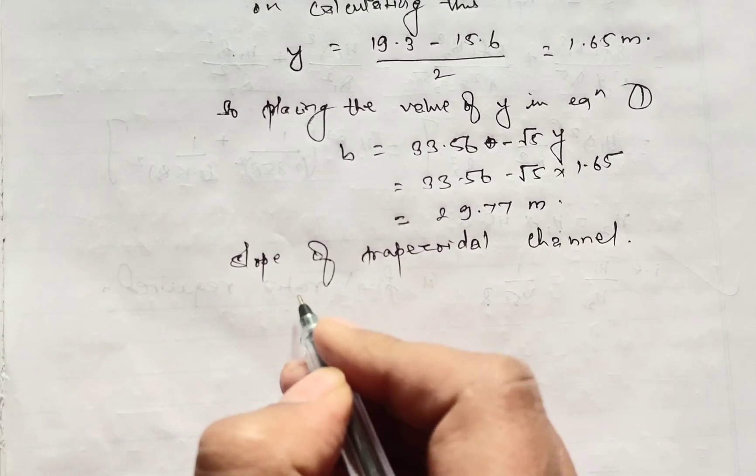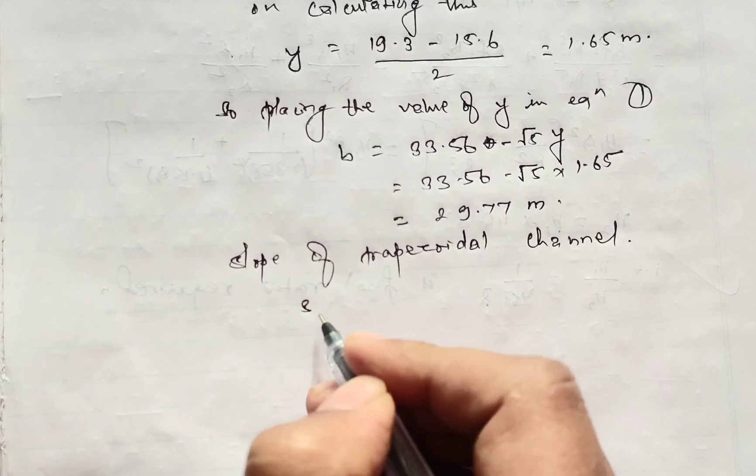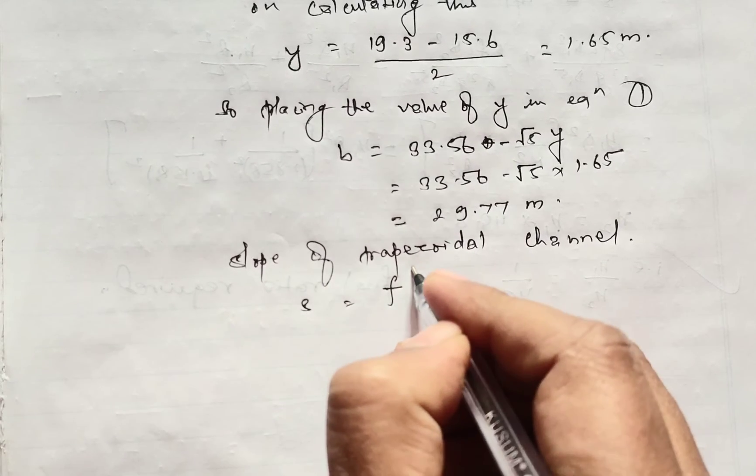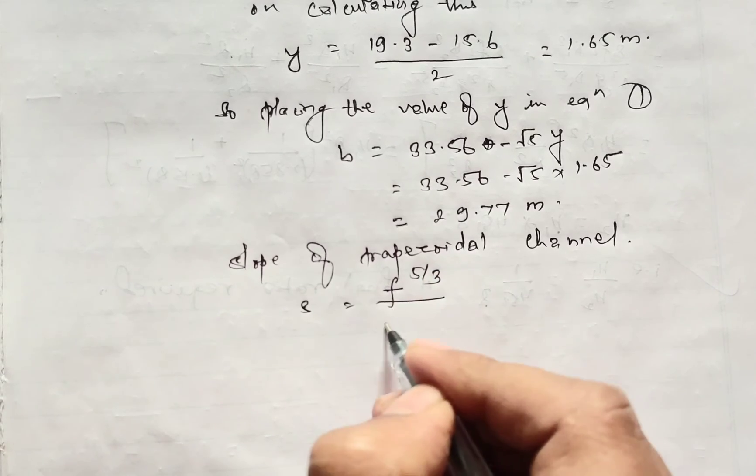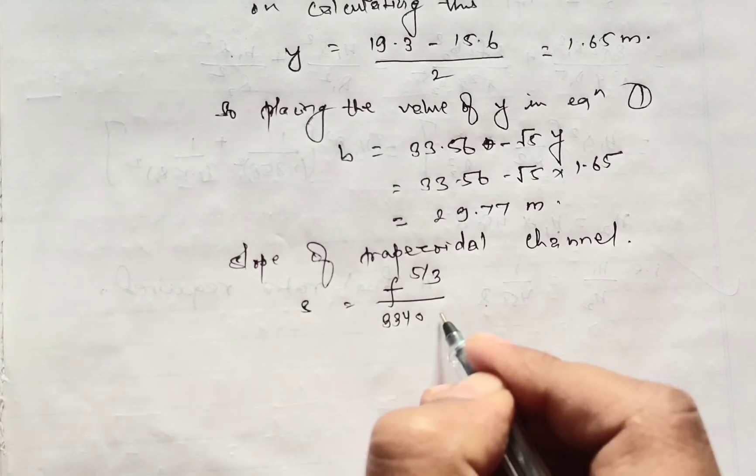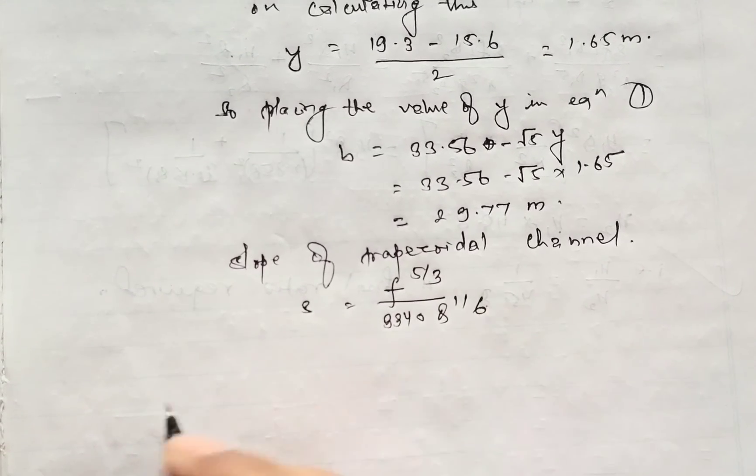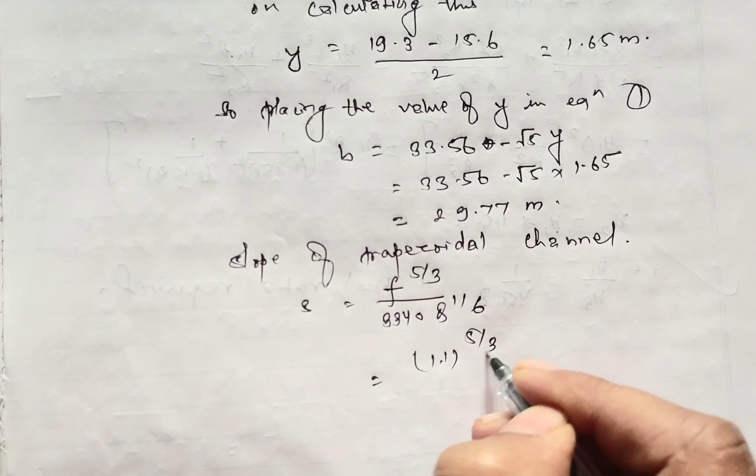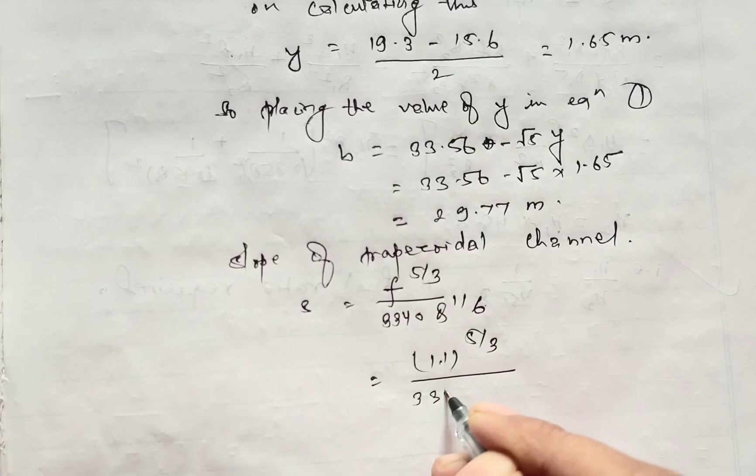The slope calculation formula in Lacey's theory is S equals F to the power 5 by 3 divided by 3340 Q to the power 1 by 6. Placing the values, F is 1.1 to the power 5 by 3 divided by 3340 Q to the power 1 by 6.